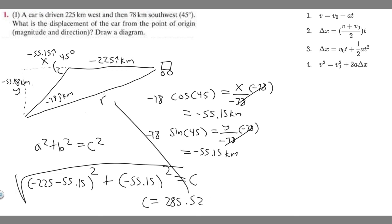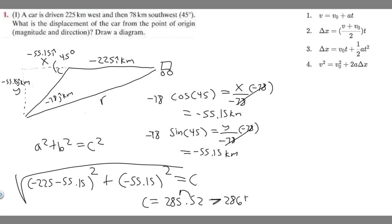Rounding to the whole number, that's 286 kilometers. So r equals 286 kilometers — that's the magnitude of the displacement. Now we need to find the direction, so let's go ahead and find that next.